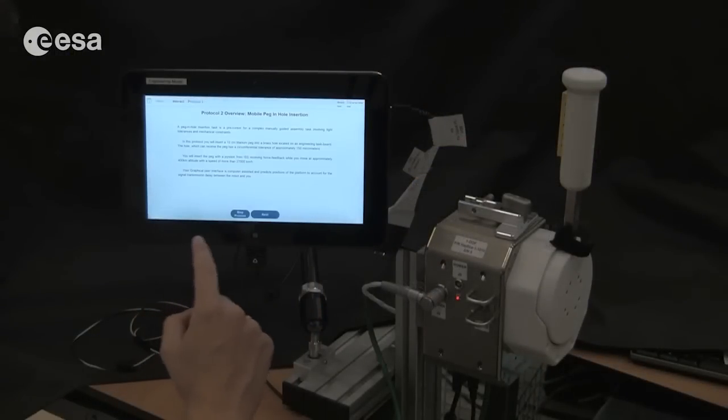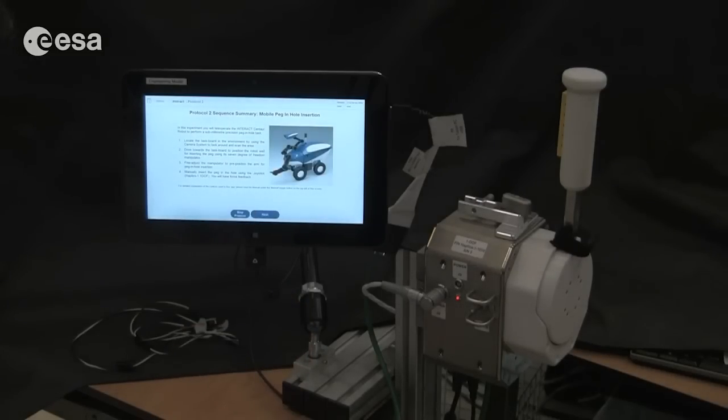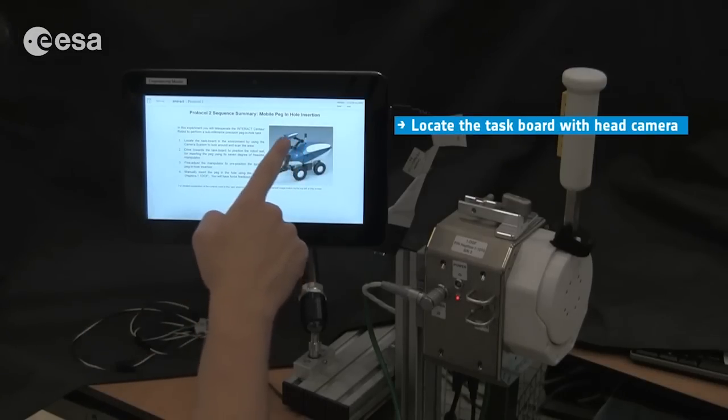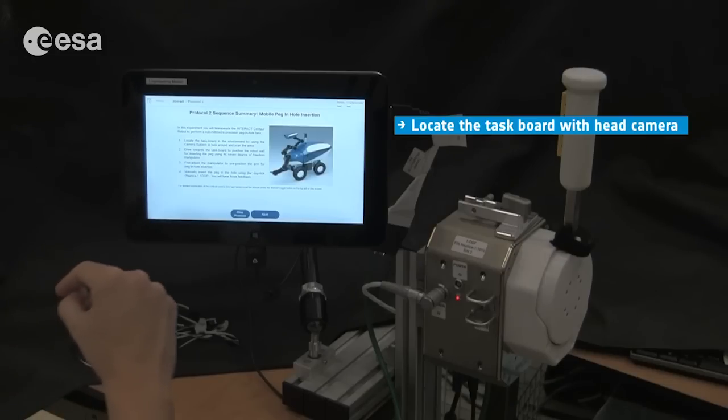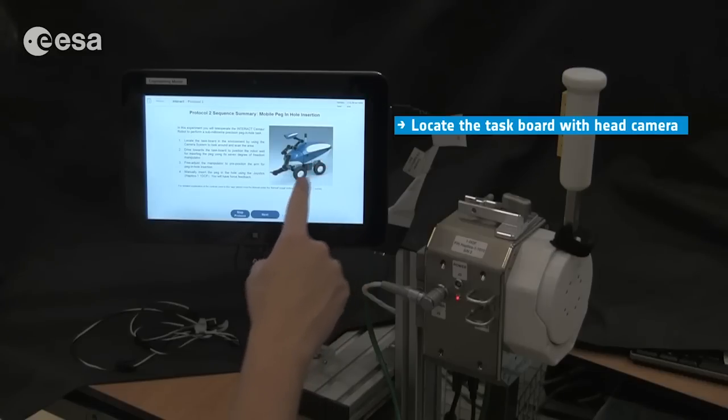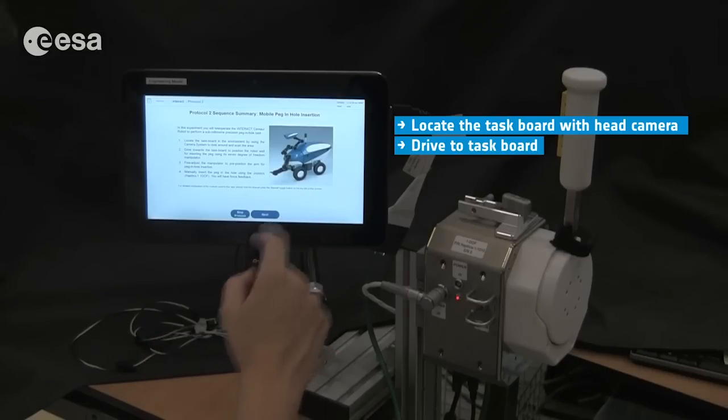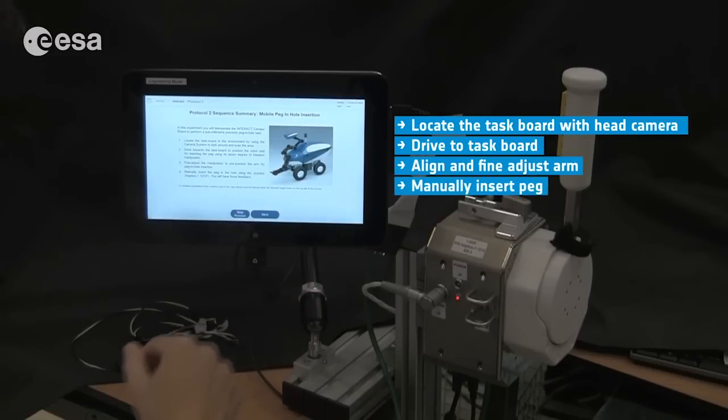The first screen gives you an overview of the task. The second screen gives the sequence summary, which consists of first locating the task board. For this, you will use the camera head of the rover and pan and tilt the camera to identify the task board in the room. Afterwards, you will use the motion platform of the Interact Centaur to drive to the task board in a favorable position. You will be supported by virtual reality overlay and predictive information that compensates for the time delay between space and ground. After you have reached the location of the task board, you will use the robot arm to manipulate a pack into a hole on the task board.